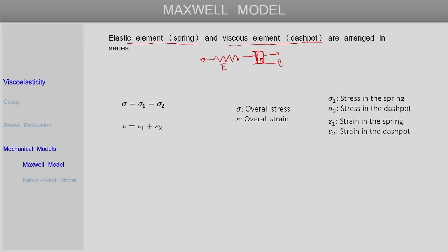For this model, if an overall stress sigma is applied and correspondingly an overall strain epsilon is produced, then the overall stress sigma will be equal to the stress in the elastic element — the spring — and also equal to the stress in the viscous element — the dashpot. Since the two elements are in series, the strains produced in the individual elements epsilon_1 and epsilon_2 when added will give the overall strain of the entire Maxwell model.